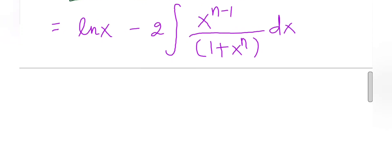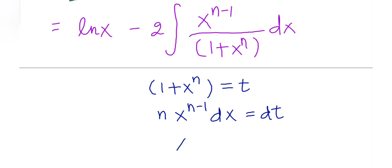Now, if I observe carefully, I can do a substitution. Let's take 1 + x^n = t. Differentiating both sides, I get n·x^(n-1) dx = dt, or x^(n-1) dx = dt/n. So I am going to use this substitution.